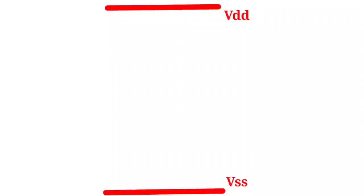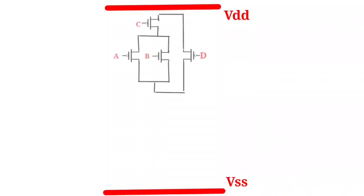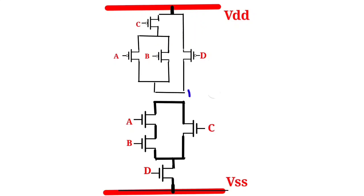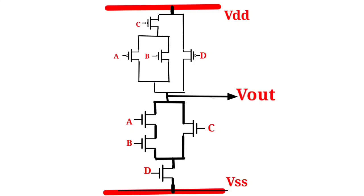Now we can complete the CMOS circuit diagram. We draw the power rail and ground rail, then place the PMOS network near the power rail. All source terminals of the NMOS network are combined and connected to the ground rail, while the source terminals of the PMOS network are connected to the supply voltage. From the drain junction of the PMOS and NMOS networks, we take the output. You can also short the common input terminals if desired.